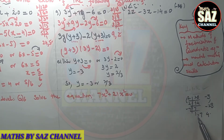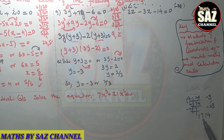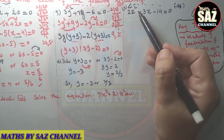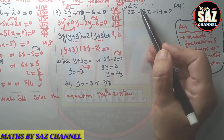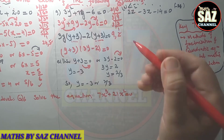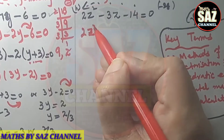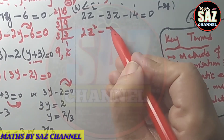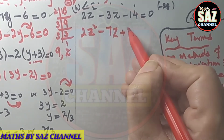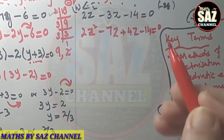Now, what sign to attach to 7 and 4 is really important to understand. Since the middle term has a negative sign, the larger factor will have the negative sign. So we write: 2z² - 7z + 4z - 14 = 0.